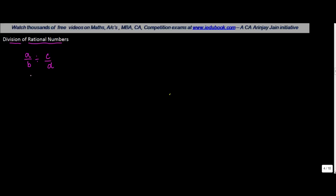Let us see how to divide rational numbers. If you have a rational number a upon b which is to be divided by another rational number c upon d, in order to divide one rational number by the other, we find out the multiplicative inverse or the reciprocal of the divisor. In this case the divisor is c upon d, so the reciprocal of c upon d will be d upon c.